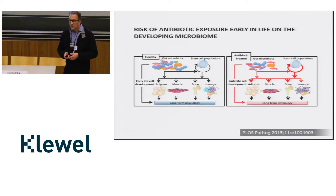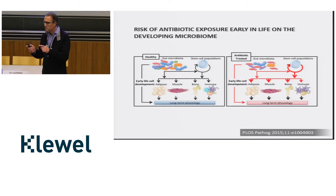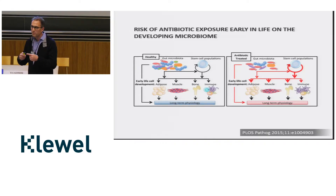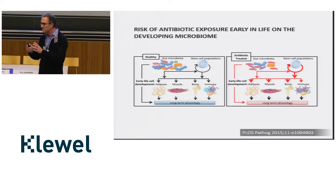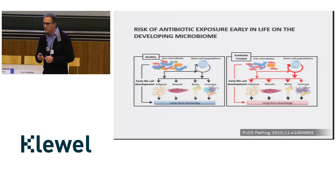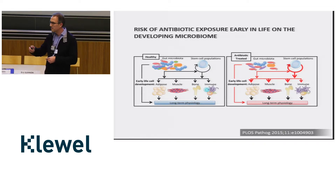Furthermore, the bacteria in the gut interact with our stem cells and affect how the proliferation of these stem cells happens. So if we are giving antibiotics, we are intervening in this process. This may be one of the explanations why giving antibiotics early in life may have an impact on health later in life.